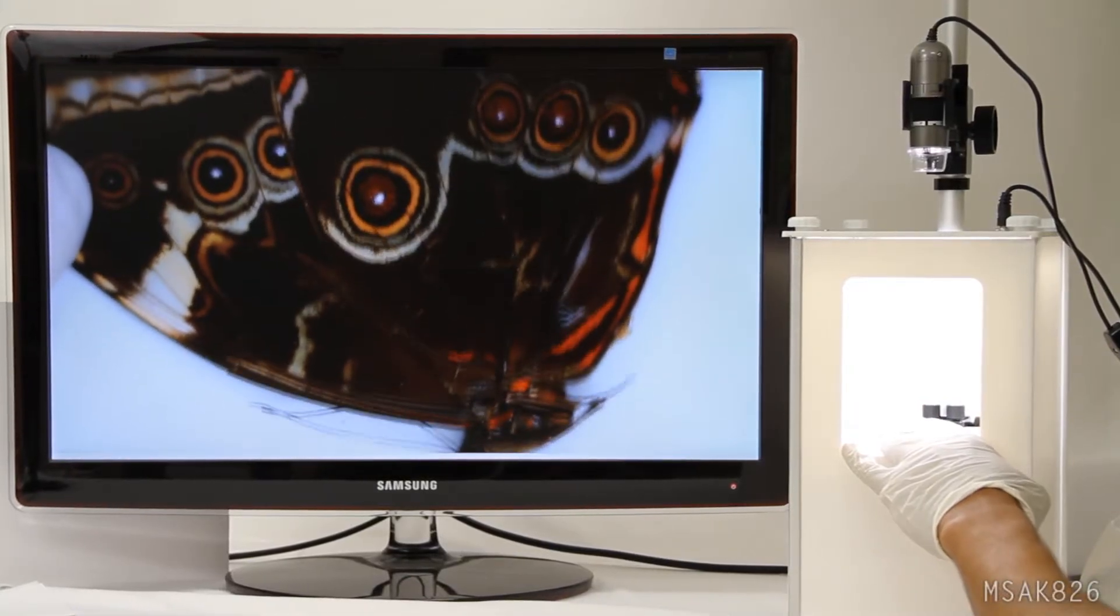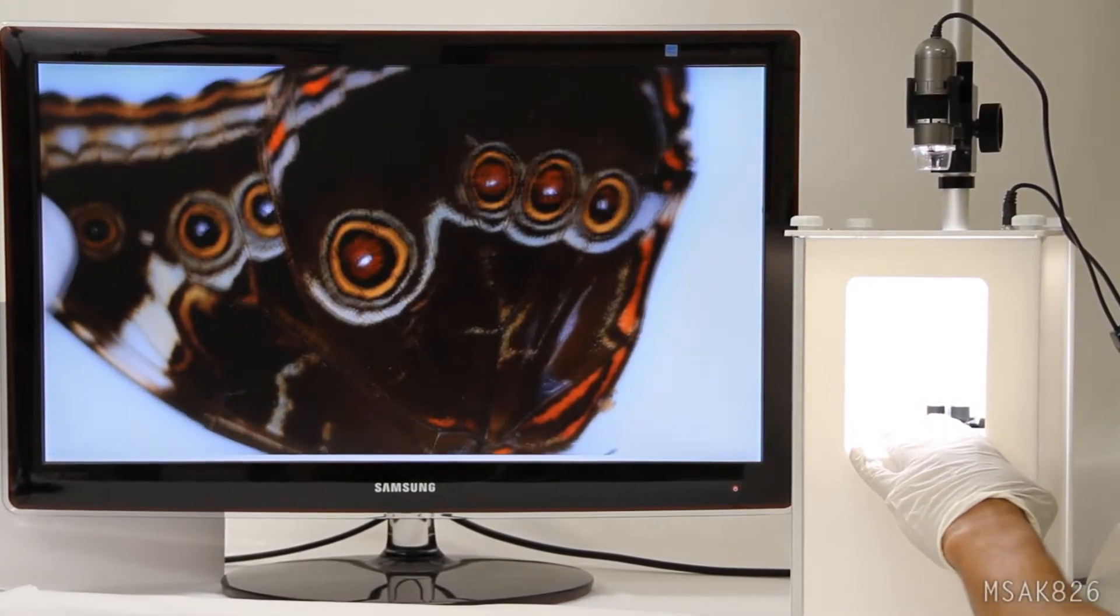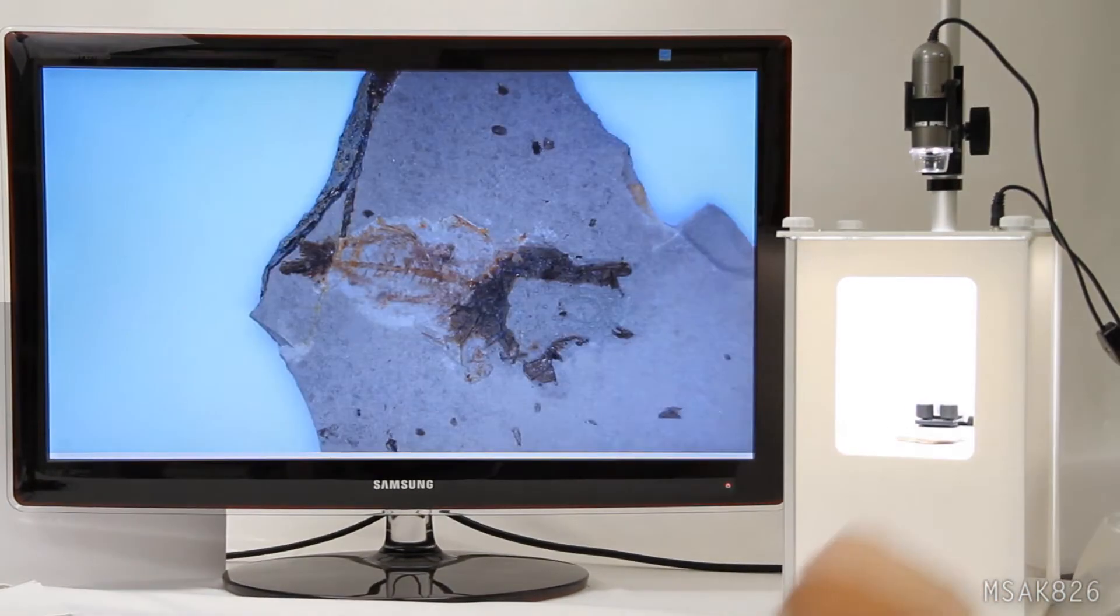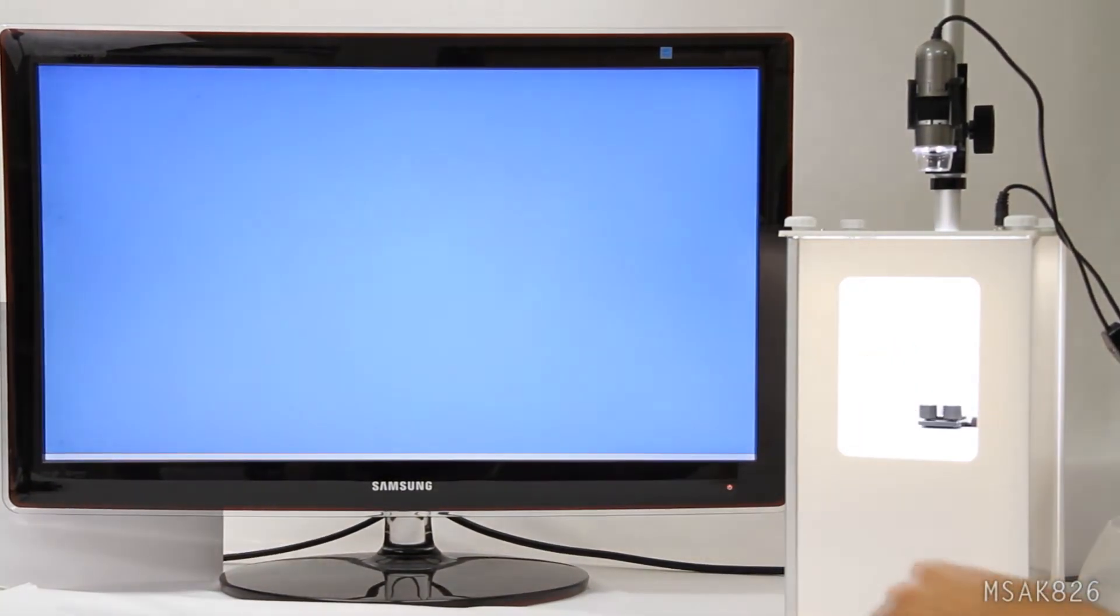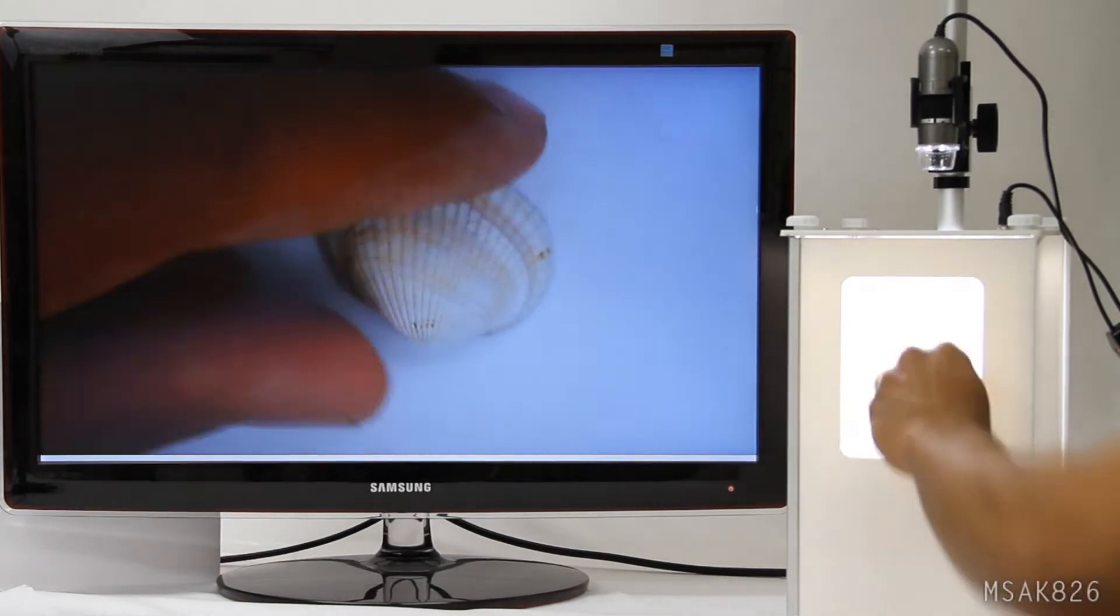The MS-AK826 has built-in cool white LED lighting that can be switched on or off. Effectively photograph countless subjects consecutively with ease.